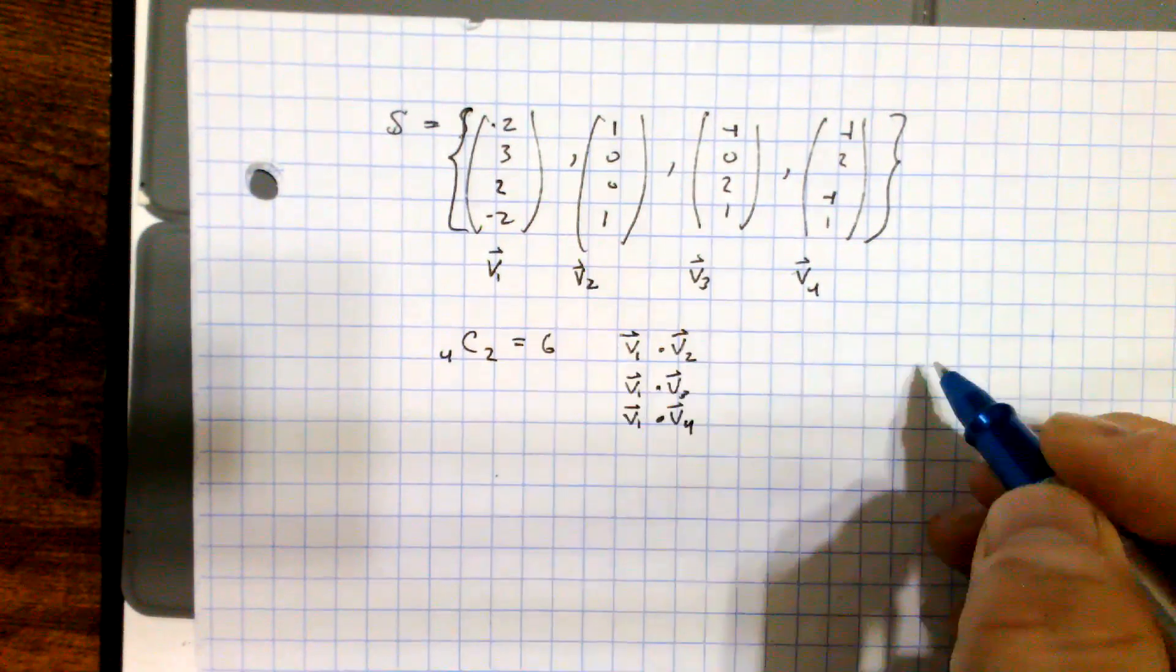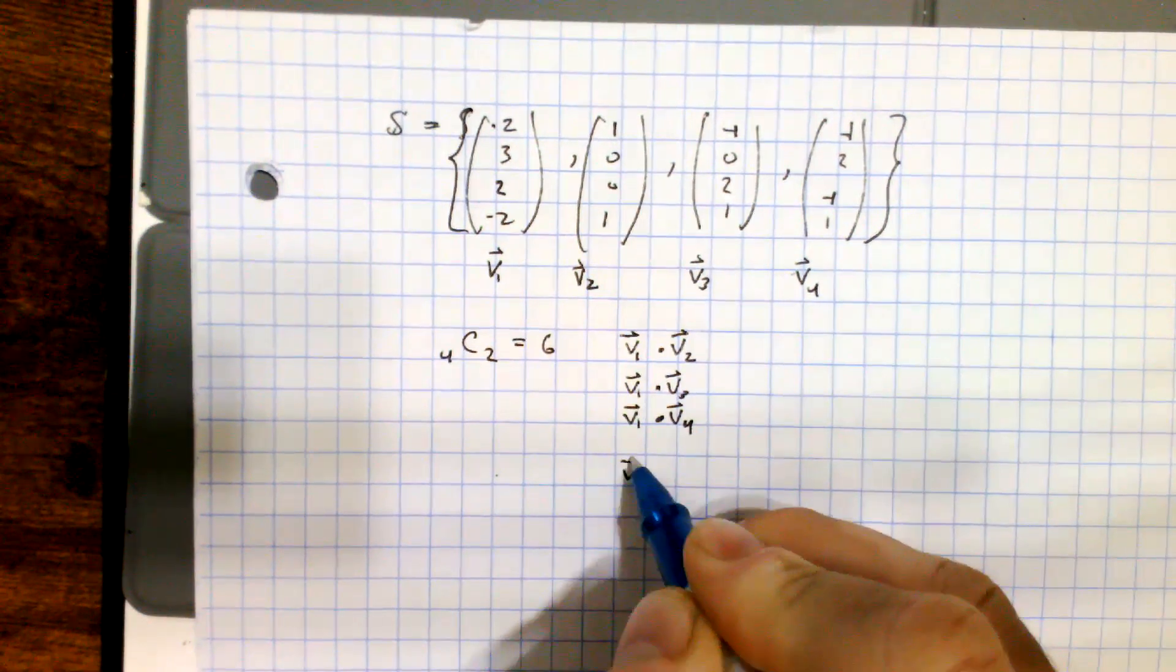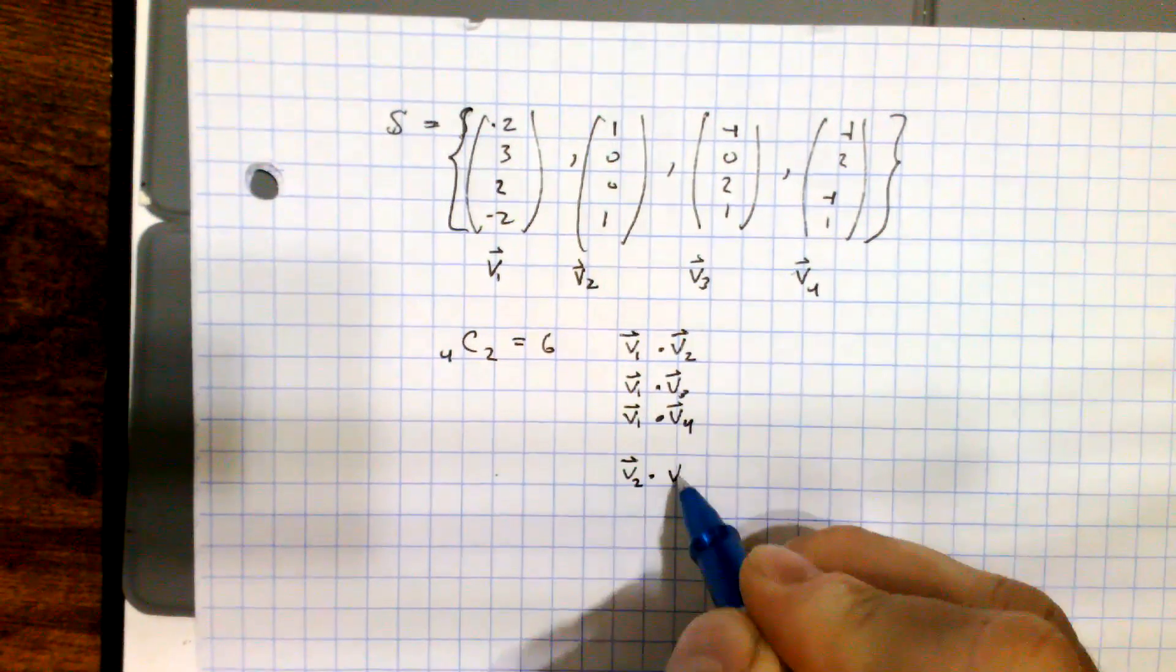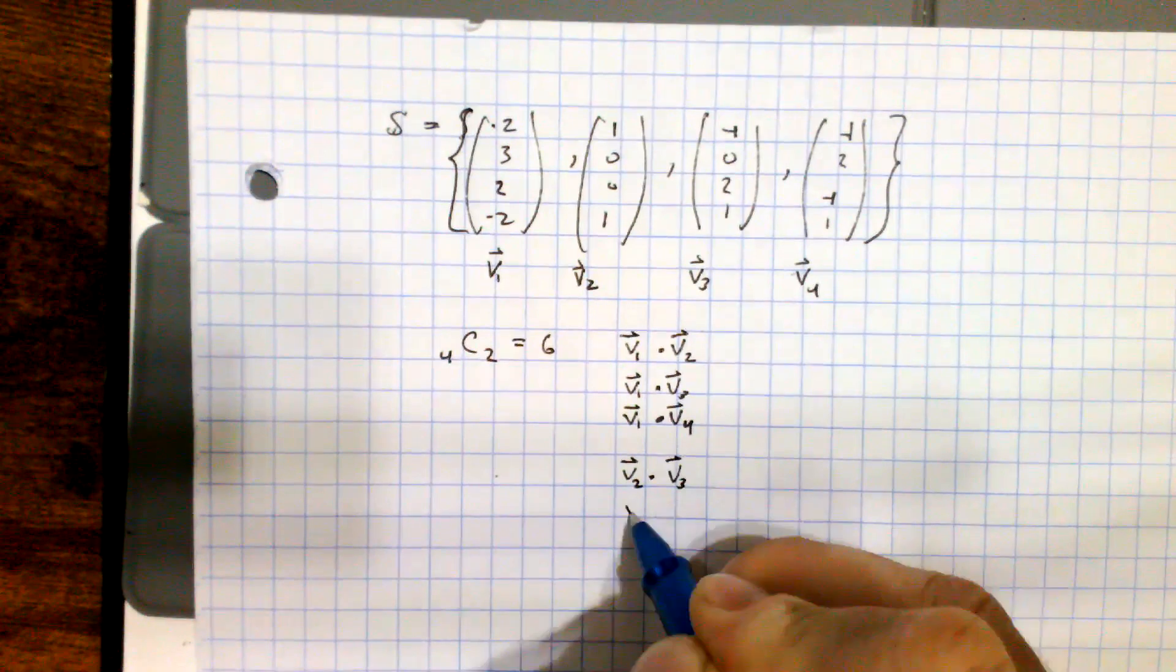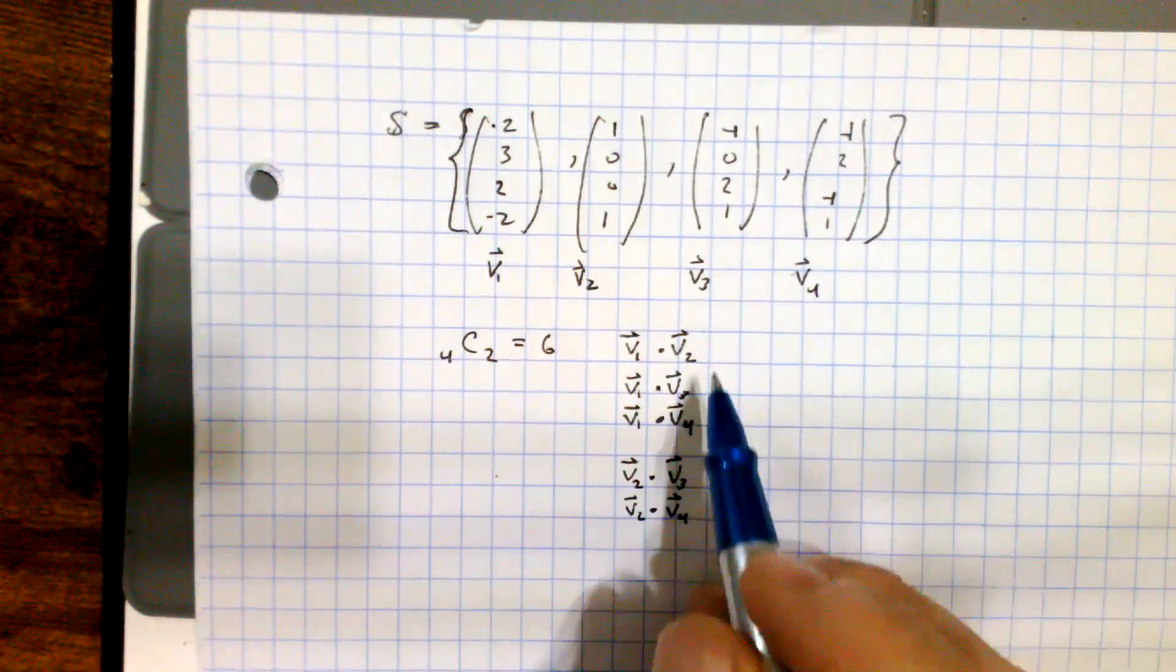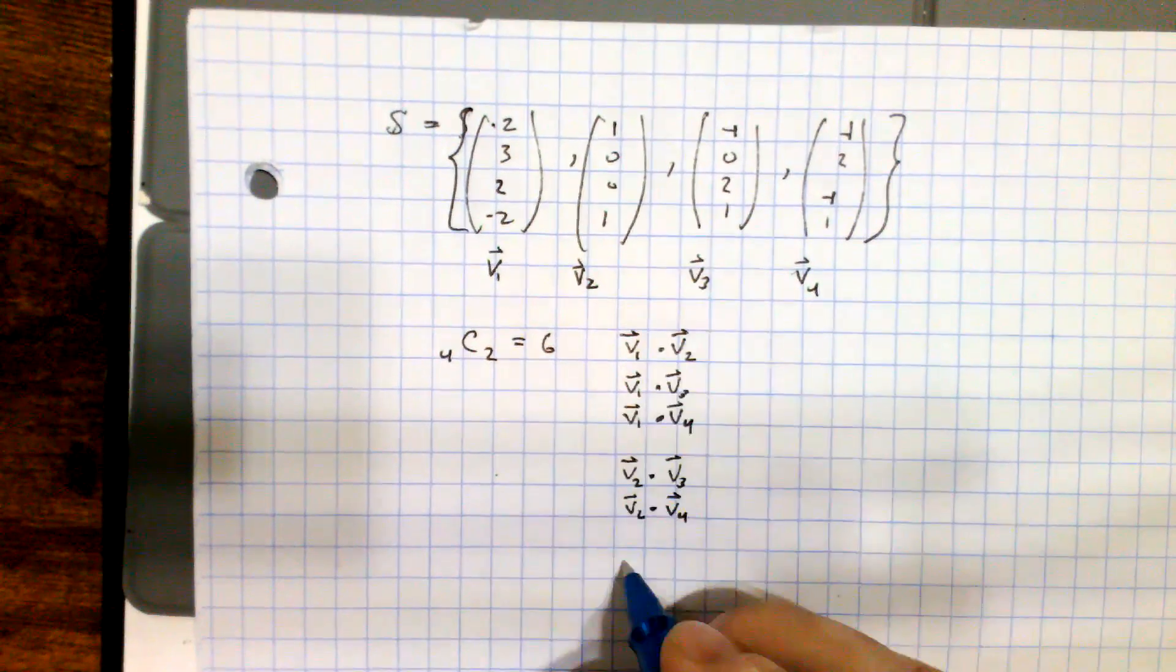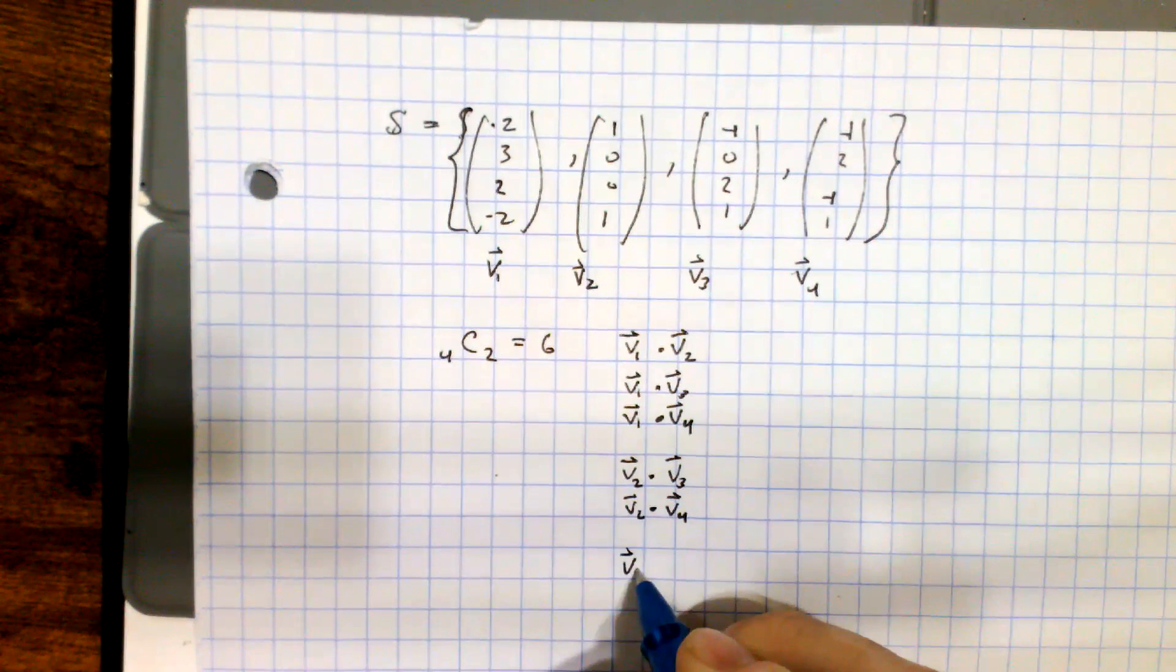And then I'm going to consider, I guess I'll do it down here, B2, and what's left? I'm going to have to dot it with B3, and B2 and dot it with B4. So that takes care of all those combinations, and then the last one will be B3 dotted with B4.